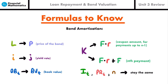We can also view bonds as a loan that can be amortized. For bond amortization, the notation changes: the loan amount becomes the bond price, the interest rate becomes the yield rate j, the outstanding balance at time t becomes the book value BV_t, and the payments are the coupon amounts F×r — except the last payment, which is the coupon plus the redemption value C. Everything else — interest at t, principal at t, and N (number of coupons) — represents the same concepts.